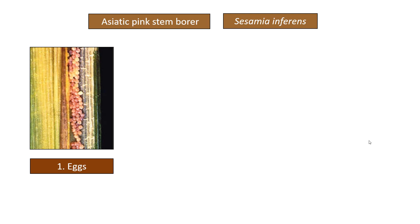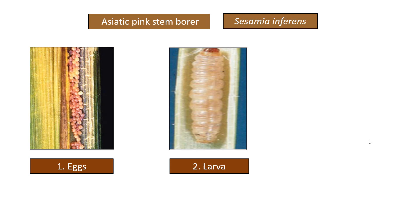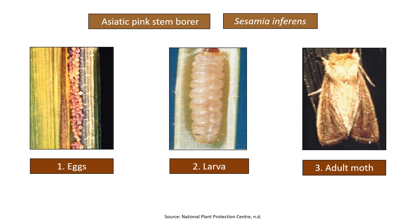Asiatic pink stem borer: Eggs are bead-like and laid in rows between the leaf sheath and the stem. The larva has an orange-red head and a body which is purplish-pink dorsally and white ventrally. The adult is a light-brown colored moth with dark brown markings on the forewing. The head and thorax have a thick brown hair tuft.